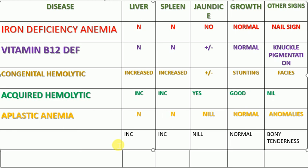Yes, you are right — it is leukemia. In leukemia there is a slight increase in liver size along with pallor, an increase in spleen size, no jaundice, normal growth, and bony tenderness. In OPD you will usually find a high WBC count with pallor and infections not responding to treatment — that's when you come to know the child has leukemia.